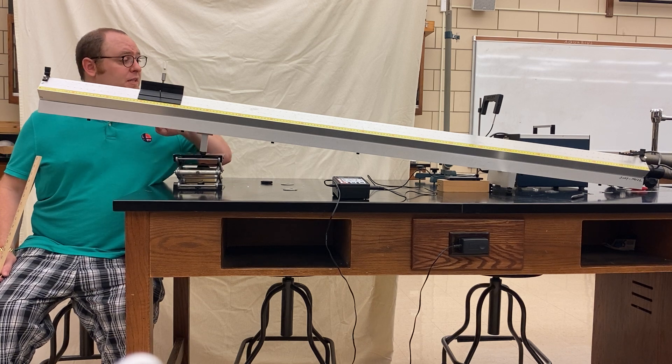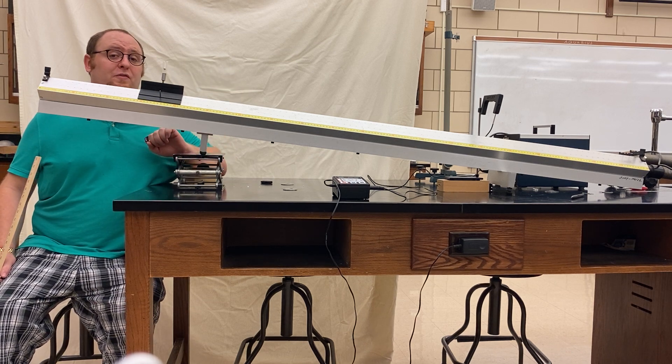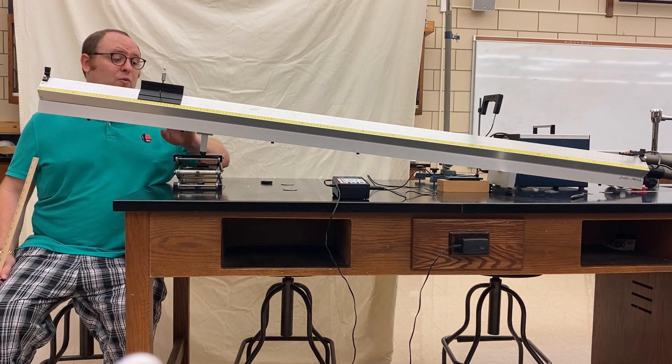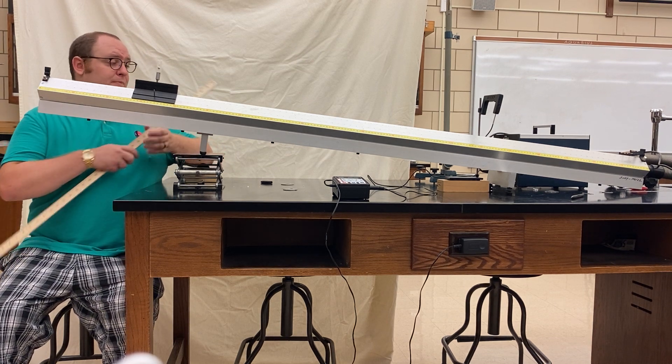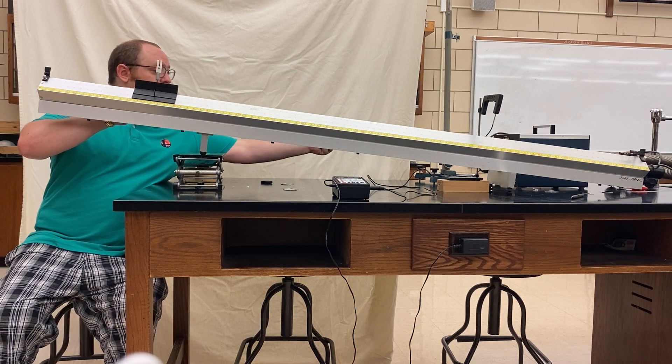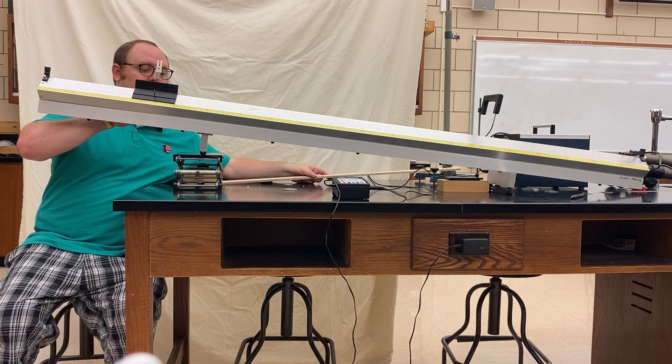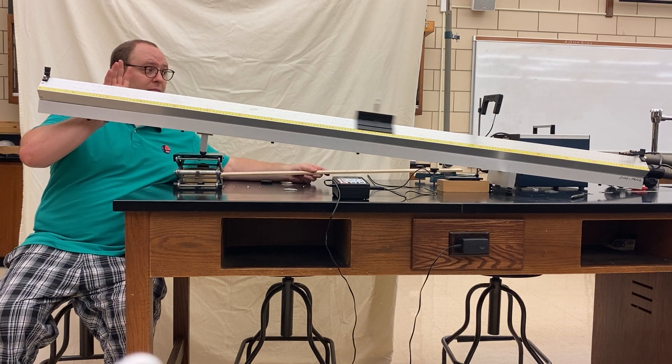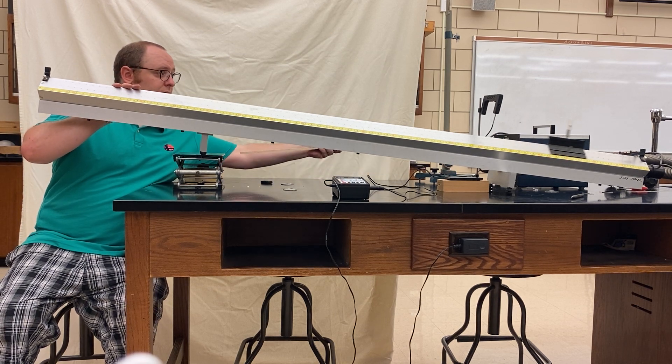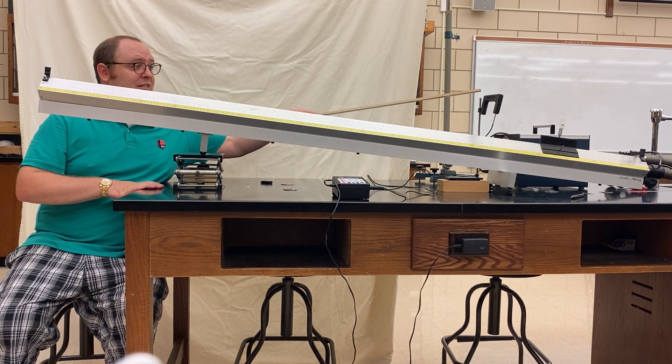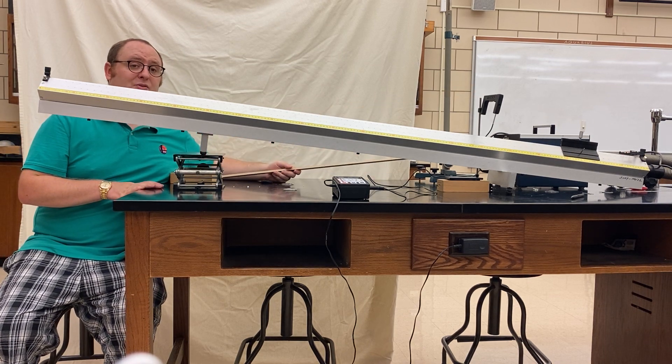We're going to use an air track for a frictionless surface and find the velocity at the bottom two different ways. One is experimental. We're going to put this at a set spot, turn on the air, and when it flies through, it'll tell me exactly how fast it was traveling as it passed through that photo gate.